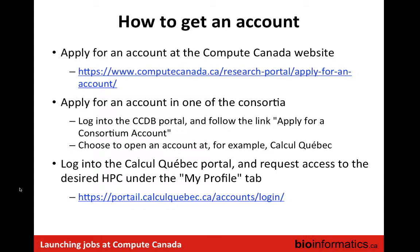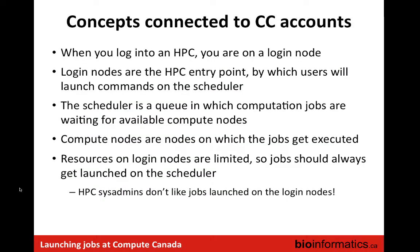These slides are available online if you're interested — follow the URL provided. To apply, go to the Compute Canada website, click to apply for an account, provide your information, and a couple of days later you should have access to the Compute Canada portal. Then you can apply to a local regional consortium from the list I've given, and after that you will have access to one of these regional HPC sites.